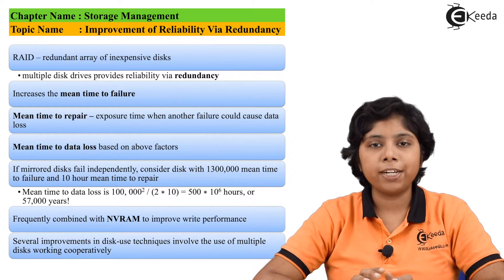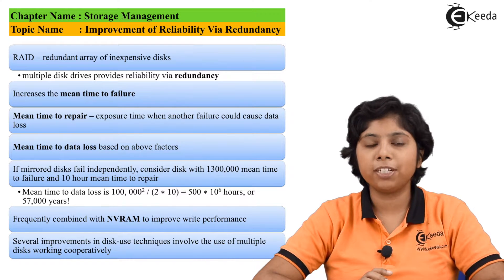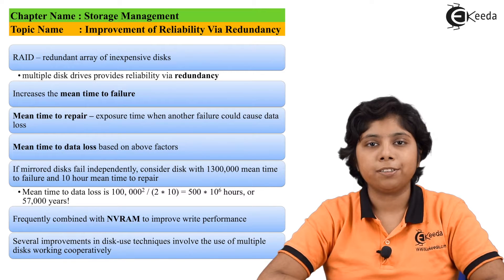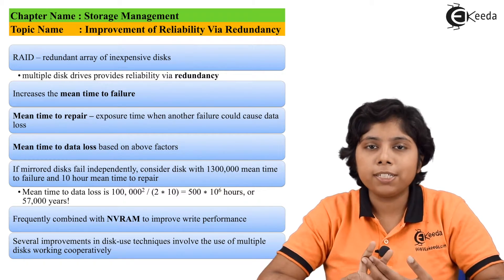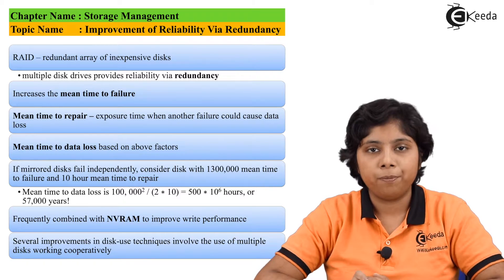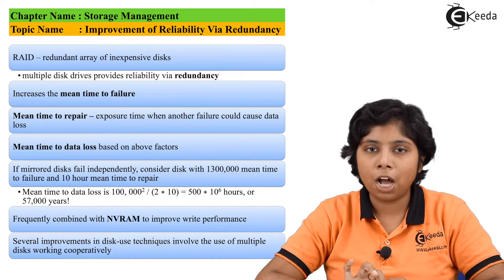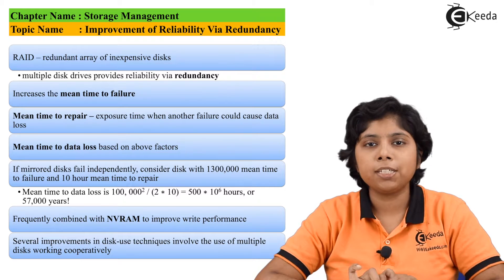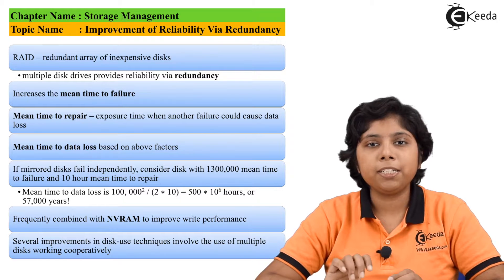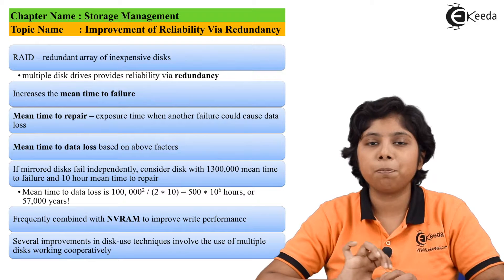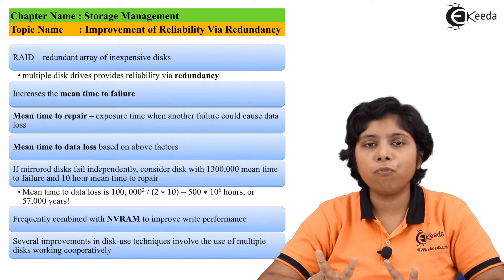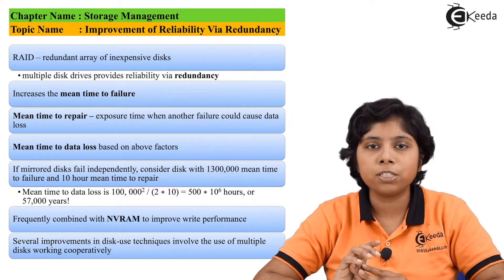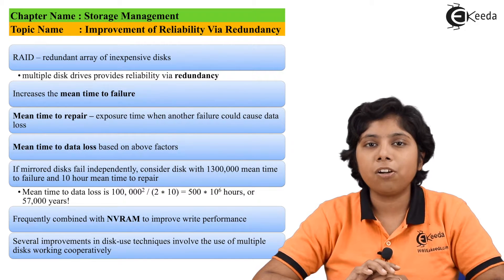Data is lost only if the second disk fails before the first disk has been repaired. As long as the first disk is being repaired and the second is being used for data retrieval, the data remains safe. When computing the mean time to failure for a mirrored volume, we consider two parts: mean time to detect and mean time to repair. Given a mean time to failure of 1 lakh hours and a mean time to repair of 10^6 seconds, the mean time to data loss calculates to 1 lakh squared divided by 2 times 10, equalling approximately 10^6 hours, which is about 57,000 years.